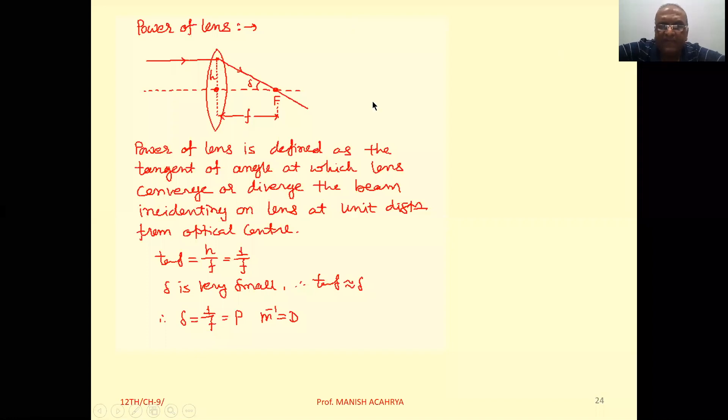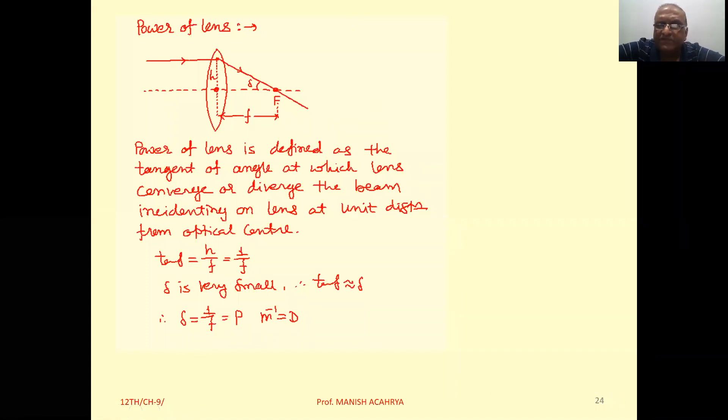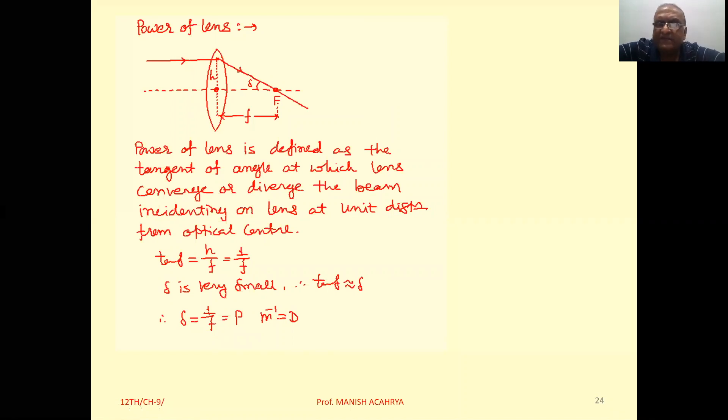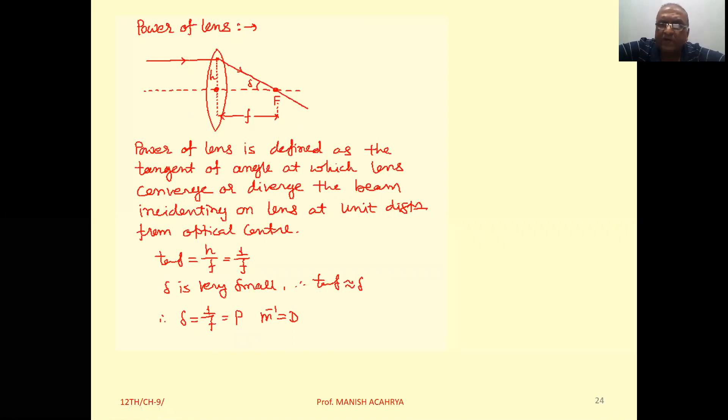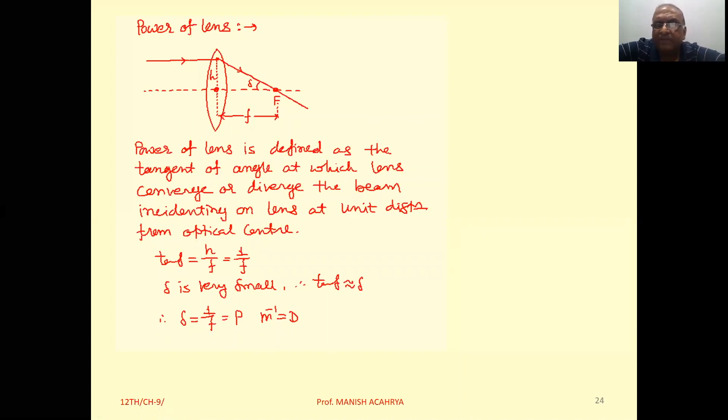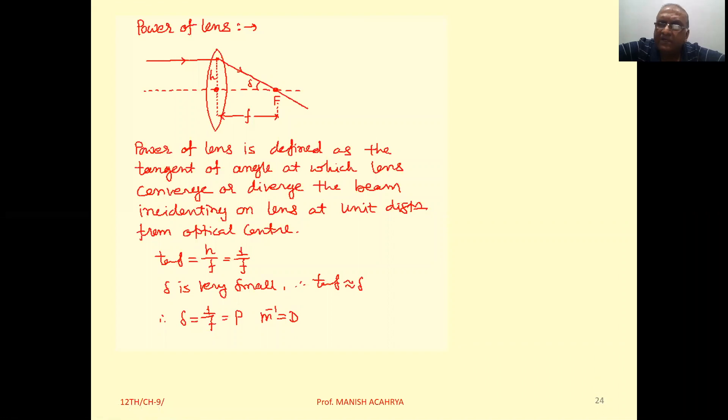Now, power of lens. So first understand its definition. Actually, power of lens, that is the power of converging or diverging the rays incidenting on the lens.